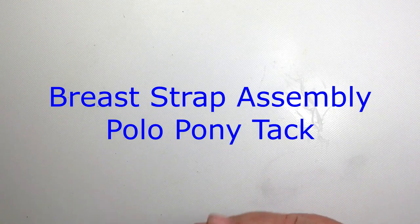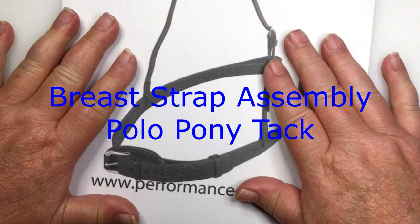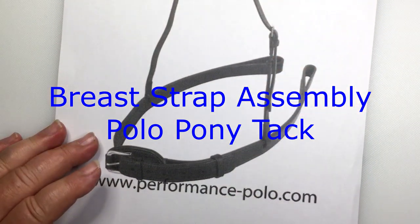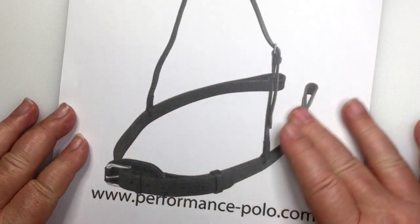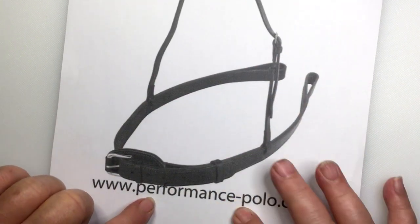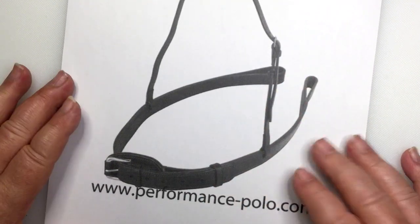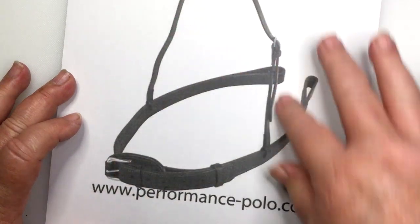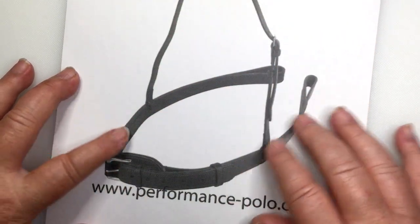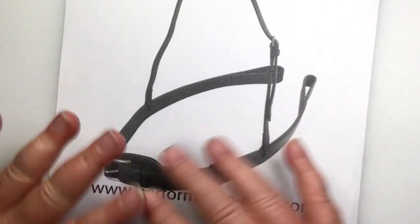Welcome to Model Horse Tack School. My name is Carrie, and today we're working on polo pony equipment tack. We're going to make the breast strap. This here is from performance-polo.com, so this is official polo pony tack. I like it because it's really very simple. It's got two buckles and then two straps, so actually four straps, but very simple design.